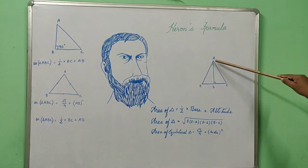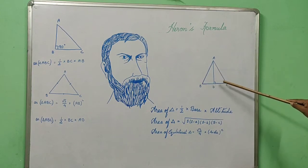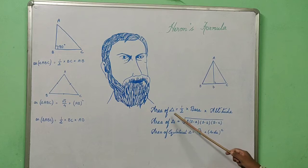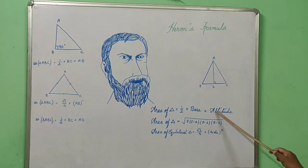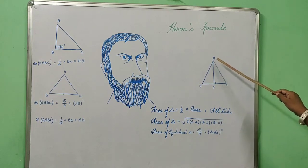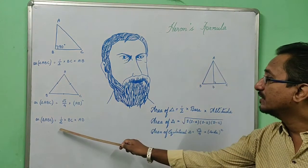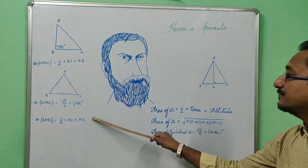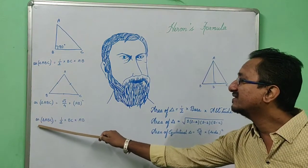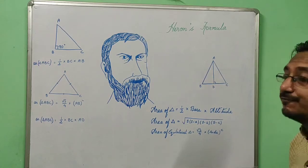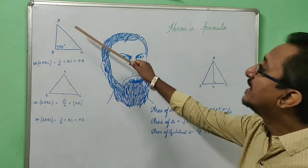First of all, let's discuss the formulas. Let us take a triangle named ABC, and I have drawn a perpendicular AD on BC which will denote the height of this triangle. We all know that the area of a triangle is half into base into height, that means half into BC into AD. This is the general formula for any triangle.